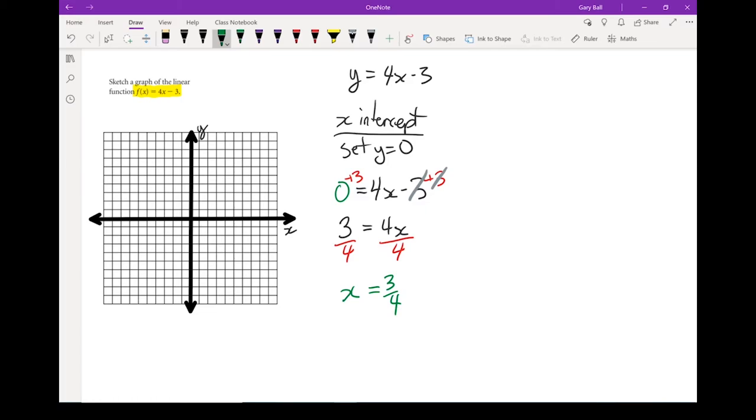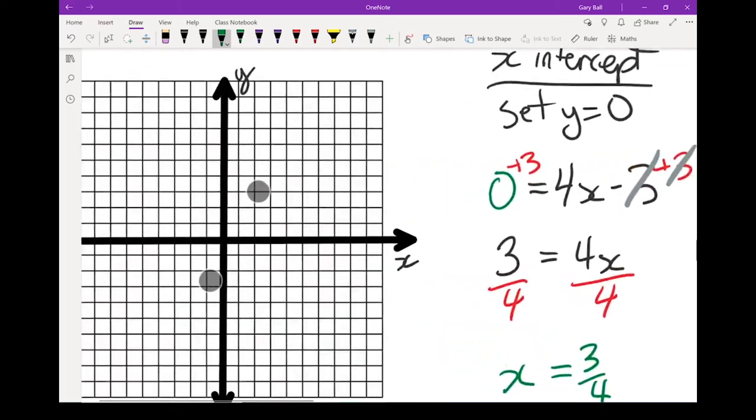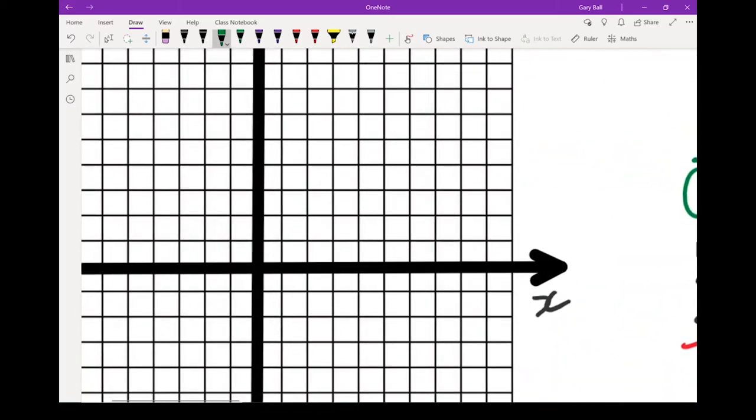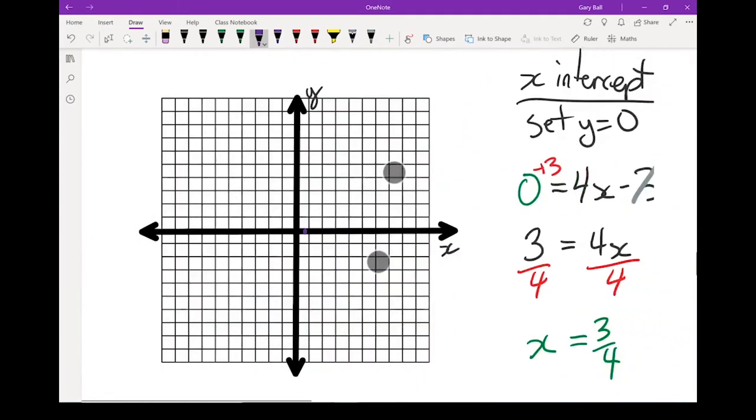So let's put that point in. I'm going to zoom in a little bit. 3 quarters, which is the same as 0.75. Put it as close as you can.